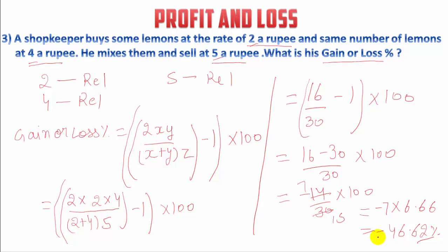Since the negative sign comes, there is a loss of 46.62 percent. That is our answer. Now we move on to the fourth question.